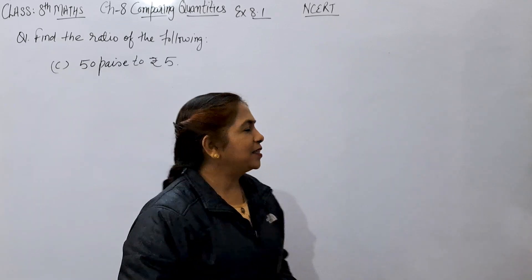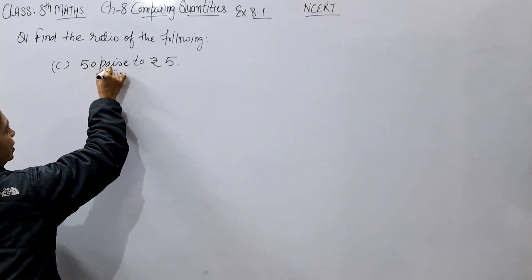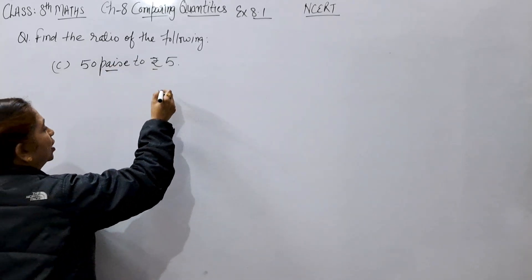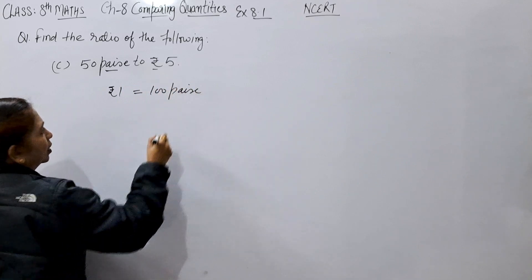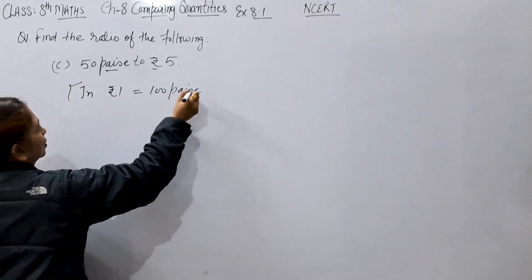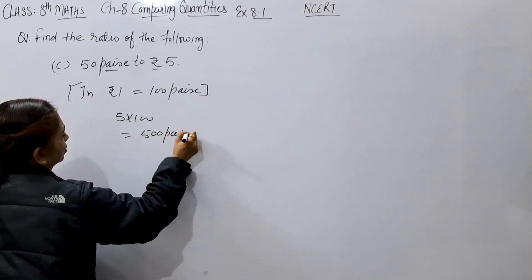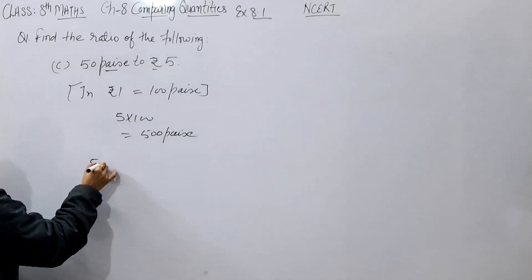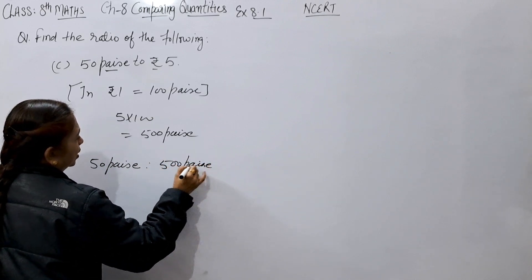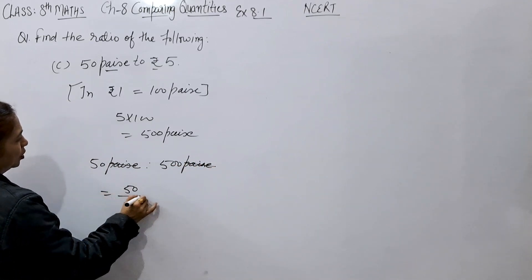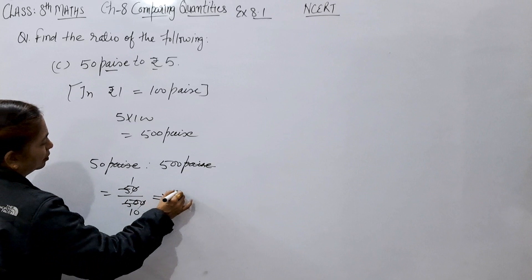Let's see part C: 50 paise to 5 rupees. We need to find the ratio. Here we have paise and rupees, so we need to convert to the same unit. In 1 rupee there are 100 paise, so we multiply 5 rupees by 100, giving us 500 paise. Now ratio: 50 paise to 500 paise. Paise cancels. 50 over 500 — dividing by 10 — gives us 1 ratio 10.